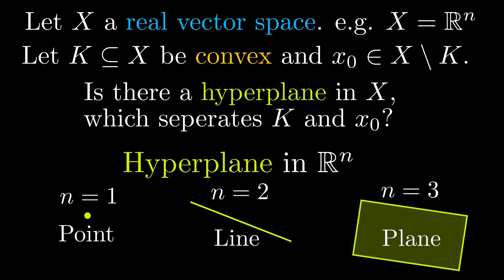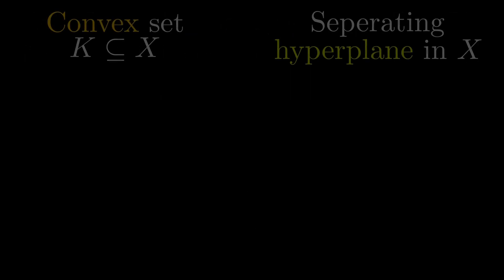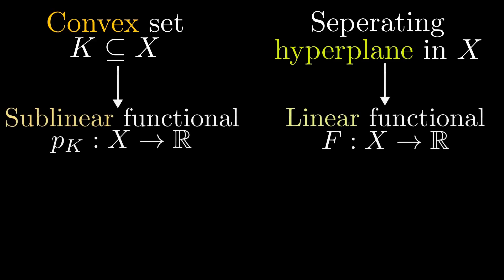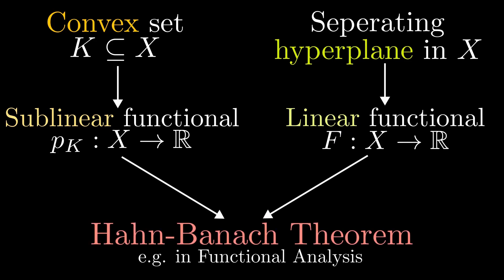So how do we solve this problem? Although this is a geometric problem, we are going to use analytic methods to solve it. Specifically, we are going to encode the convex set into something called a sublinear functional and the separating hyperplane into a linear functional. Then the Hahn-Banach theorem gives us the solution.